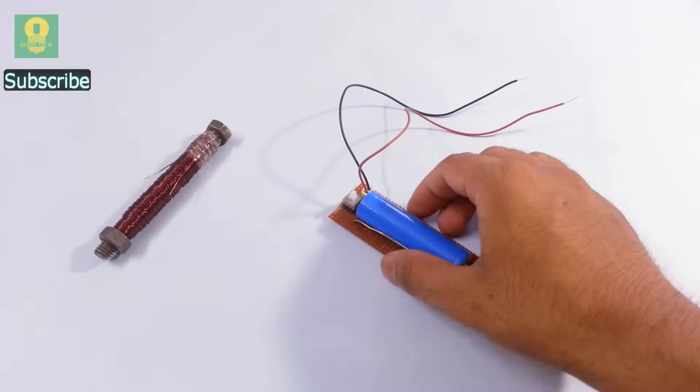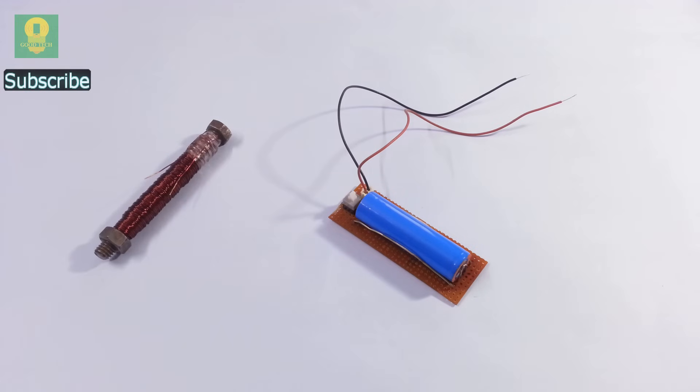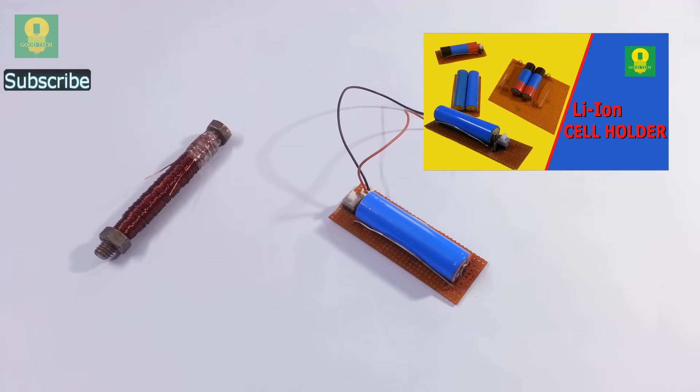Our electromagnet is almost ready. Let's connect a power source to the magnet. Here I will be using a 3.7V lithium ion cell. You can also watch my video and learn to make this lithium ion cell holder at home.